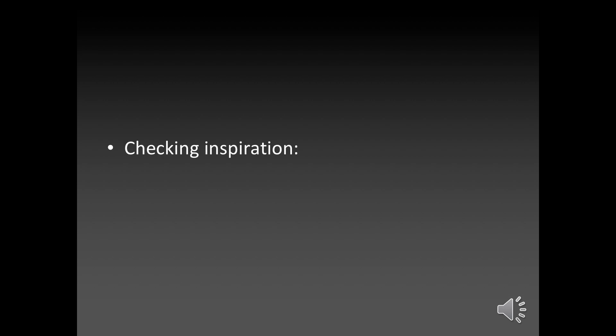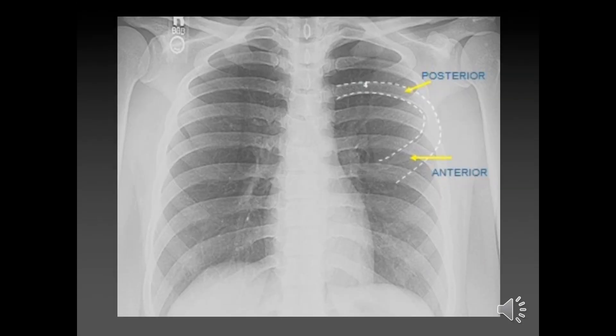Inspiration is the third aspect to assess. When looking at inspiration, we look at anterior or posterior ribs. You count from the top to the rib that is intersecting the diaphragm at the mid-clavicular line. This is the mid-clavicular line here, and this is the diaphragm — so this is where you're counting to.